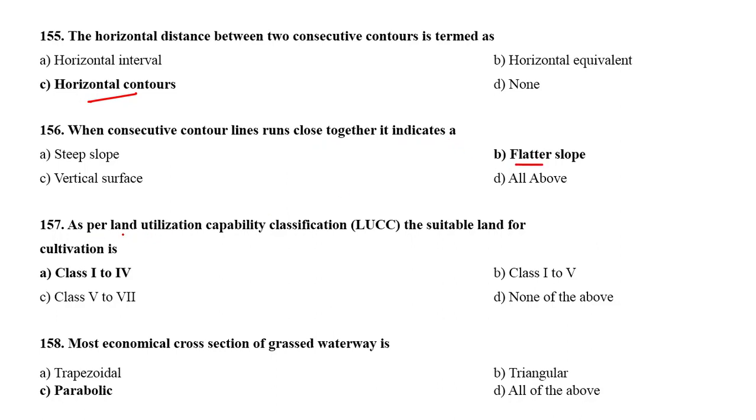As per Land Utilization Capability Classification, the suitable land for cultivation is class 1 to 4.